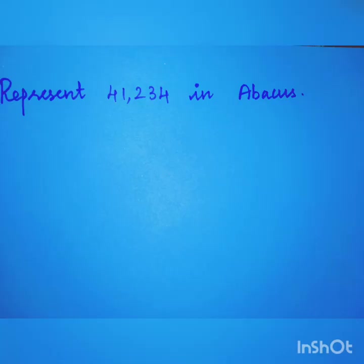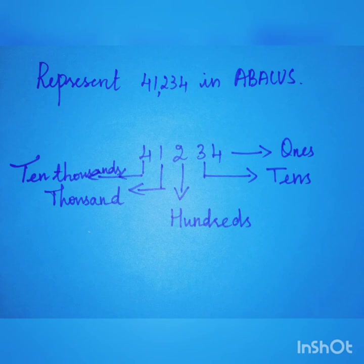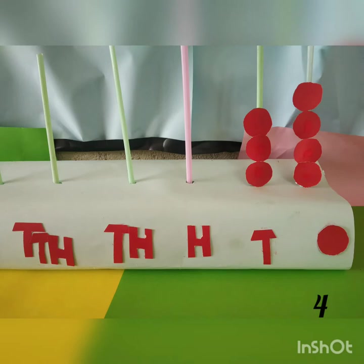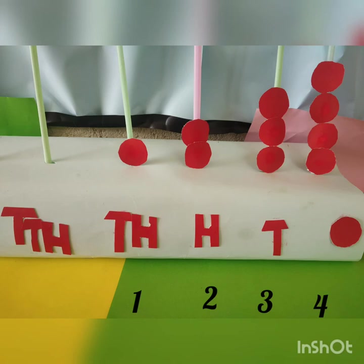Now let's try to represent 41,234 on an Abacus. Before arranging, we should know the position of each digit. Here, 4 is in 1s place, 3 is in 10s place, 2 is in 100s place, 1 is in 1000s place, and 4 is in 10,000s place. We start arranging from 1s place: 4 beads in 1s place, 3 beads in 10s place, 2 beads in 100s place, 1 bead in 1000s place, and 4 beads in 10,000s place.